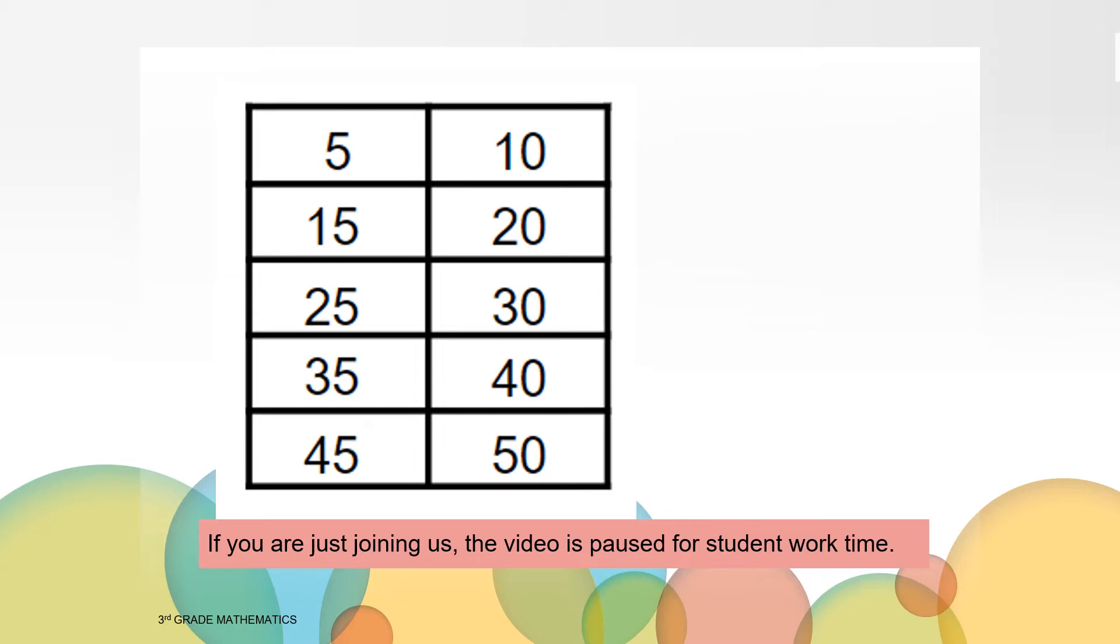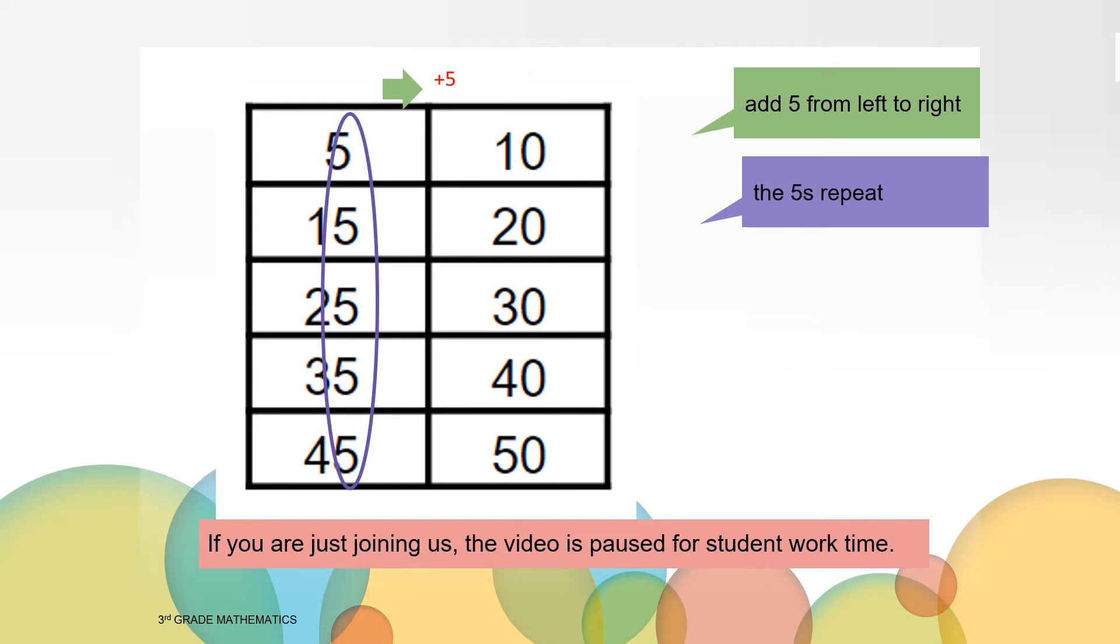Let's share some of the patterns that appear when we count by fives. As we read the chart we created from left to right, you probably noticed each number on the right is five more than the number on the left in that same row. Looking down the left-hand column, you may have noticed the number five appears and repeats in each number. Similarly, the zeros repeat in the numbers going down the right column. You may have also noticed as you follow the numbers down the right-hand column that they increase by 10.